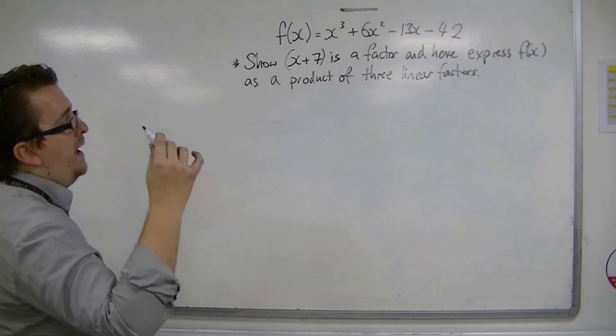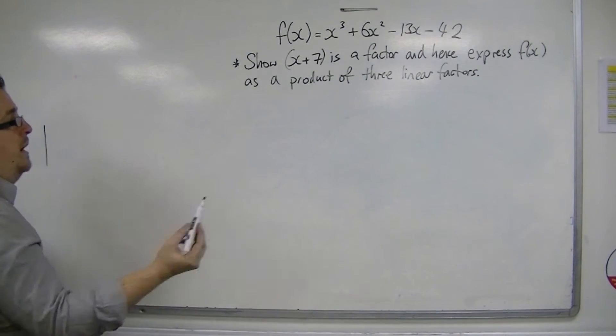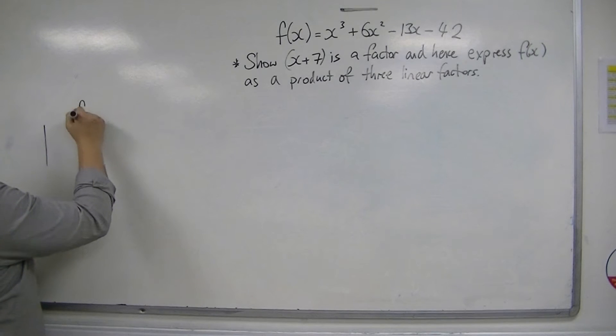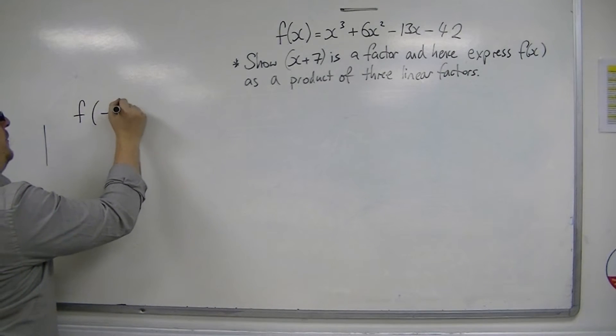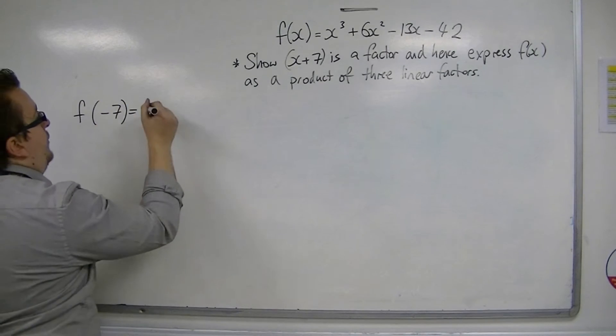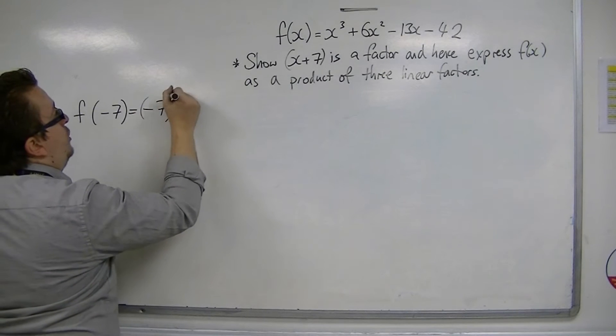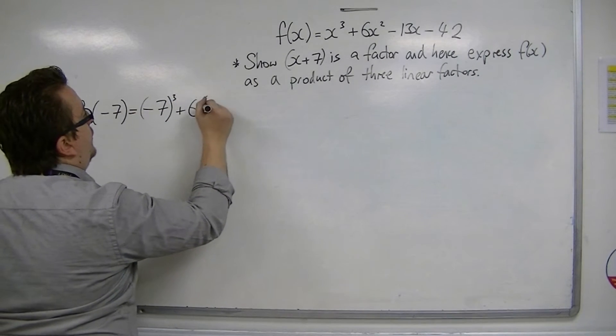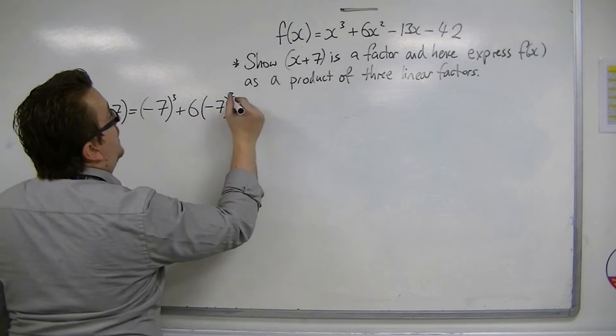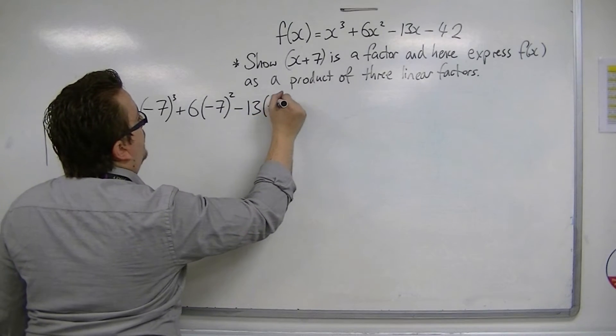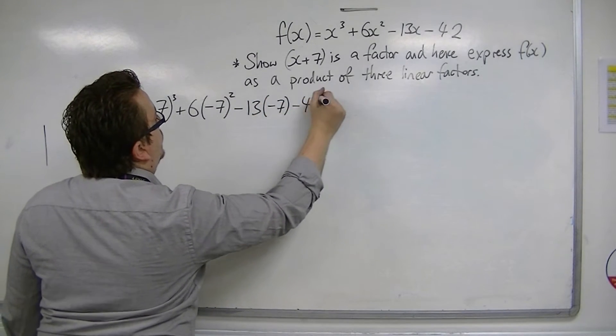So to show that x plus 7 is a factor, we must use the factor theorem. So f of minus 7 is equal to minus 7 cubed plus 6 lots of minus 7 squared, take away 13 lots of minus 7, take away 42.